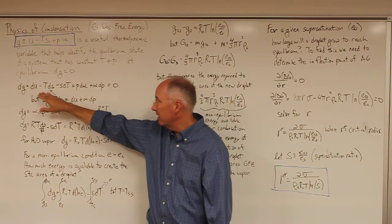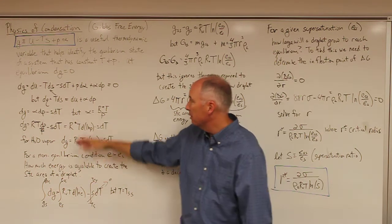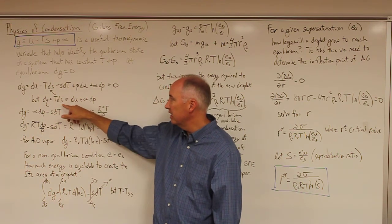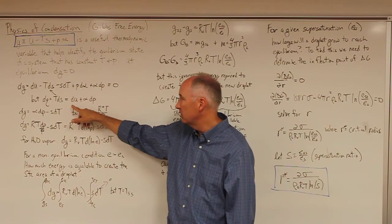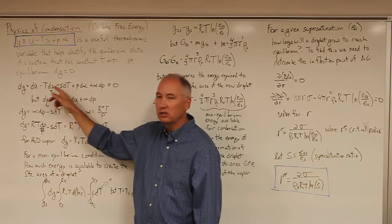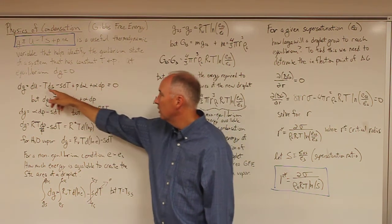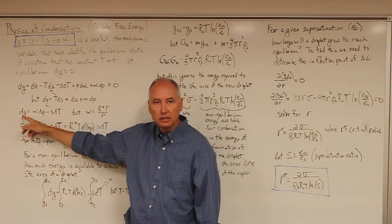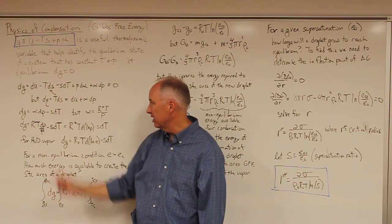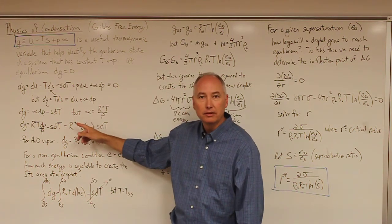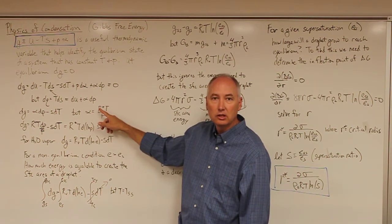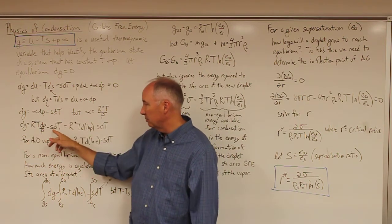We can expand the Gibbs free energy by recalling from the first law of thermodynamics that dq equals T·dS and T·dS equals du plus alpha·dp. Substituting that in, the du terms cancel and the alpha·dp terms cancel from positive and negative, leaving the differential of the Gibbs free energy function as alpha·dp minus S·dT. Recalling from the ideal gas law that specific volume equals R*T over p, we substitute that in to get a simplified expression.